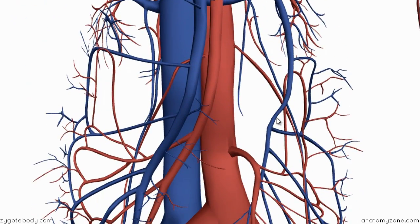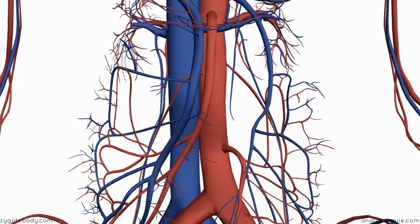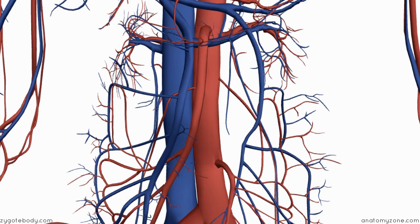The superior mesenteric vein runs alongside the superior mesenteric artery, just to the right of it. It drains blood from the small intestine, the cecum, ascending colon, and transverse colon. The inferior mesenteric vein drains blood from the splenic flexure area, the descending colon, the sigmoid colon, and the rectum.